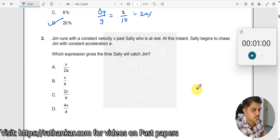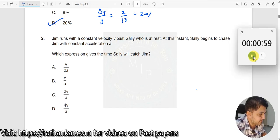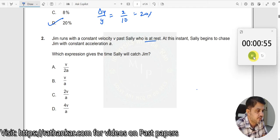Okay, question number 2. So Jim runs with a constant velocity. Let me start this. Jim runs with a constant velocity and passes Sally who is at rest.